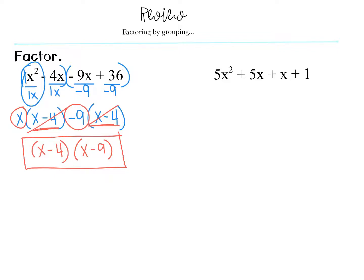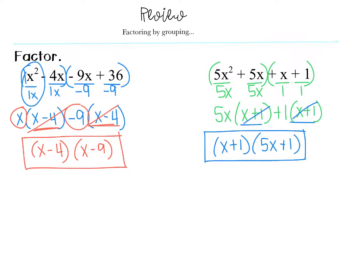I'd like you to go ahead and pause the video and try this second example on your own. Hopefully you got x plus one times five x plus one. If you have them in the opposite order, it doesn't matter which order the binomials are - it just matters that it's five x plus one and x plus one. If you did not get that, you need to pause the video and let me know.